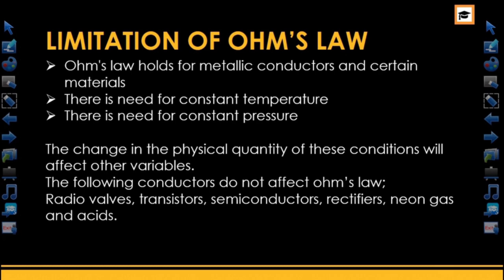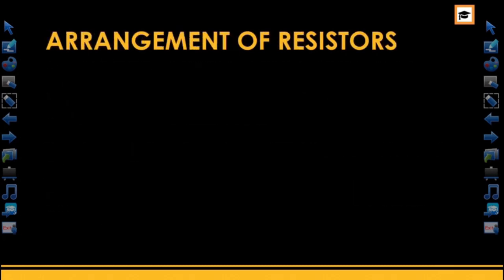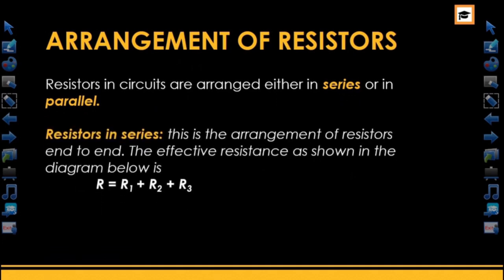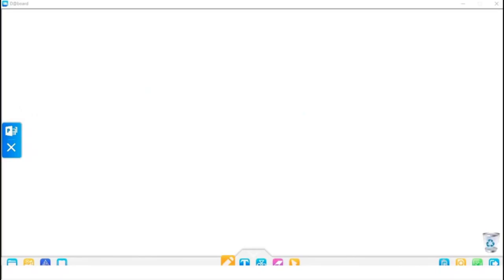In circuits, resistors can be arranged in various ways. Basically, you have two arrangements: the parallel arrangement and the series arrangement. In series connection, resistors are arranged end to end, and the effective resistance is given as R equals R1 plus R2 plus R3.